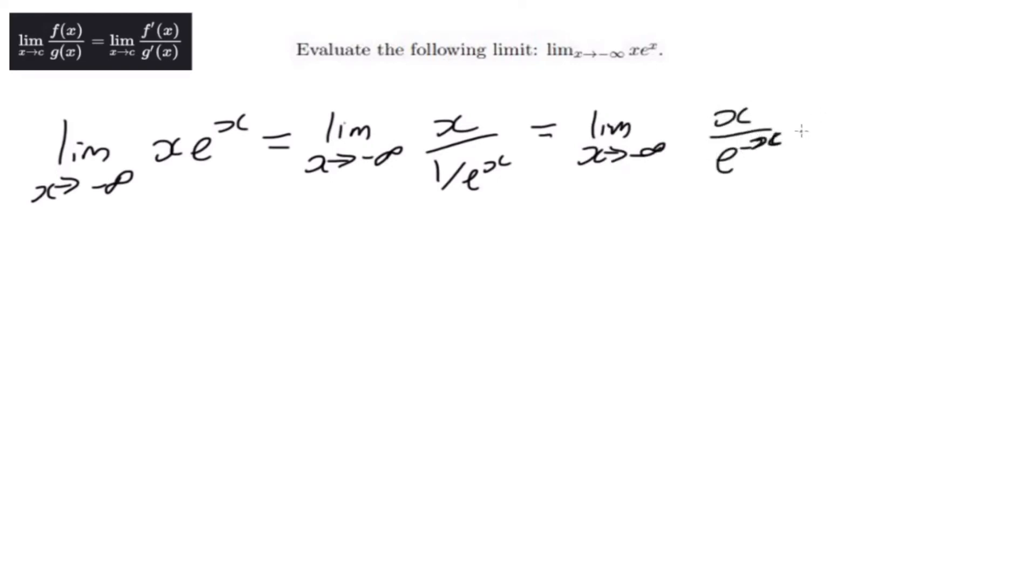And now the next step we need to do is differentiate the top and the bottom separately, and we're going to do that with respect to x because that's the only value we have. So if we differentiate it, we're going to have the limit of x towards negative infinity of 1 over minus e to the minus x.